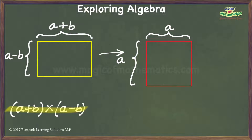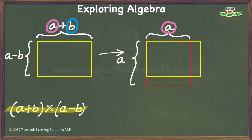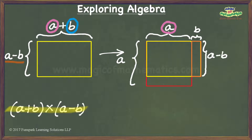Let us now see what happens when I try to fit this rectangular sheet within the square outline. Since the length of the rectangular sheet is b units more than a, which happens to be the measurement of each side of the square outline, when I try to place the rectangular sheet within the square outline, it will project out of the square by b units. It is easy to see that the rectangular piece that projects out measures a minus b units by b units.